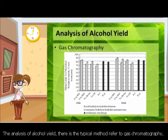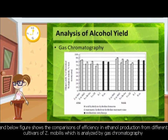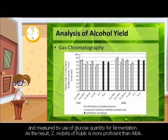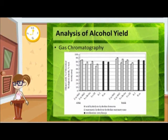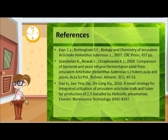The analysis of alcohol yield uses gas chromatography as the typical method. The figure shows a comparison of ethanol production efficiency from different cultivars of Zymomonas mobilis, measured using glucose quantity for fermentation. As a result, Z. mobilis rubic is more proficient than L-bike. The final slide shows the references. Thank you for your attention.